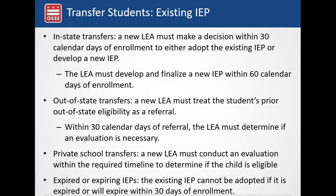For students transferring from out of state, the new LEA must treat receipt of the student's prior out-of-state eligibility as a referral — whether that's the parent telling you the student received services or actually receiving the IEP. Within 30 calendar days of that referral, the LEA must determine if an evaluation is necessary. For private school transfers, the new LEA must conduct an evaluation within the required timeline to determine if the child is eligible.